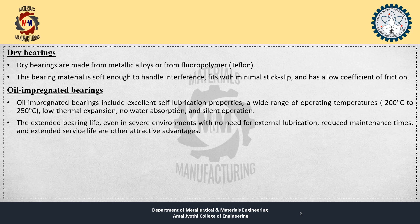Dry bearings are made from metallic alloys or from fluoropolymers like Teflon. This bearing material is soft enough to handle interference fits with minimal stick-slip and has a low coefficient of friction. Oil impregnated bearings include excellent self-lubrication properties, a wide operating temperature range from about -200°C to 250°C, low thermal expansion, no water absorption, silent operation, and extended bearing life even in severe environments with no need for external lubrication.